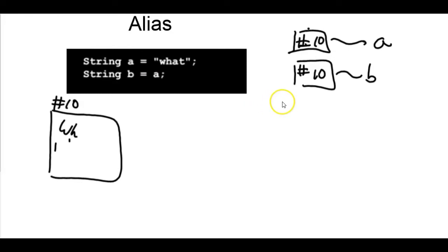So, one of the things we can do with class types is create what's called an alias. And the way this works is pretty simple. Suppose we have two variables. The string A, which is pointing to the string literal what, which is in memory location 10. And then the string B, pointing to something else. And then in the next line of code.